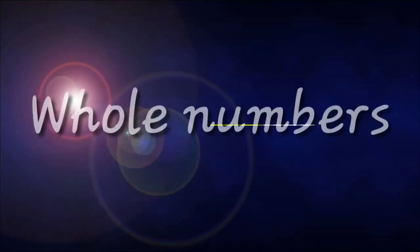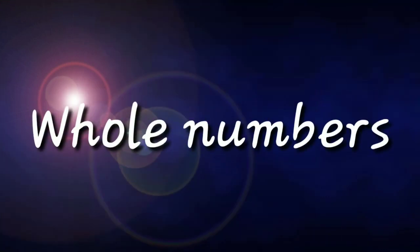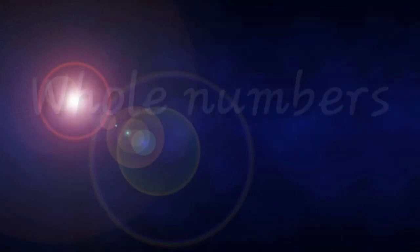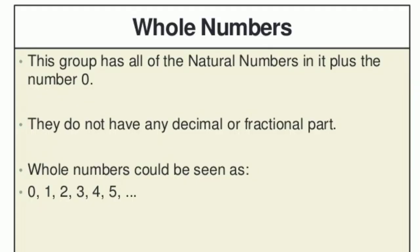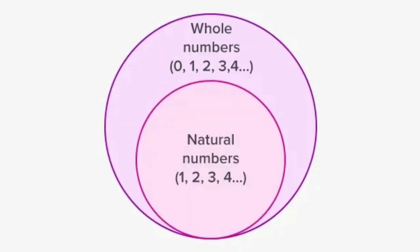The next category is whole numbers. Whole numbers are the numbers which include the natural numbers as well as 0. So we can say that numbers starting from 0, 1, 2, 3, and so on are considered as whole numbers. Likewise natural numbers, they do not have any decimal or fractional part. If you look at this diagram, all the natural numbers plus 0 are considered as part of whole numbers.